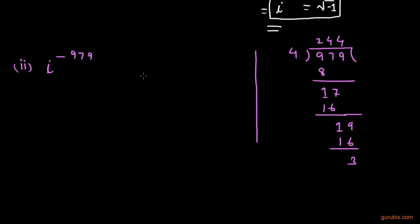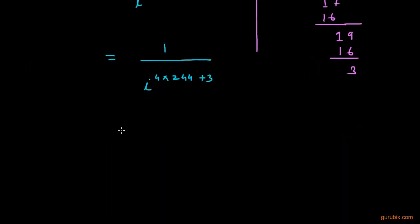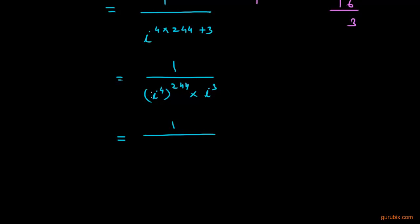So we can write this value as 1 over iota raised to positive 979, or as 1 over iota raised to (4 × 244 + 3), which can be written as 1 over iota raised to 4, raised to 244, into iota raised to 3. We know that iota raised to 4 equals 1.